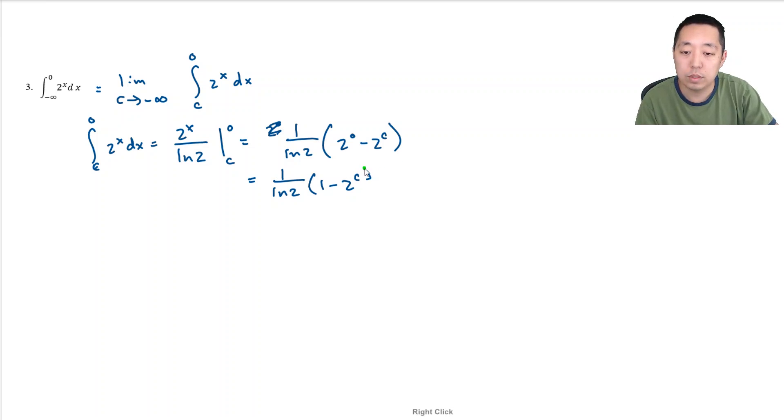We want to take the limit as c goes to negative infinity of 1 over ln of 2, 1 minus 2 to the c. As c goes to negative infinity, 2 to a negative big number is going to be 0. So this is 1 over ln of 2, 1 minus 0. That's just equal to 1 over ln of 2.